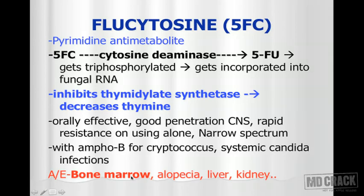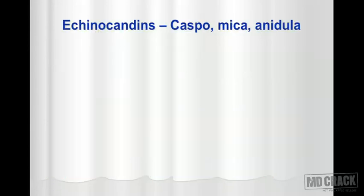The adverse effects of 5-FC include bone marrow suppression, leading to leukopenia and neutropenia. This is because the active form is 5-FU, which is essentially an anti-cancer drug. In addition to antifungal action, it can produce alopecia, liver damage, and kidney damage.